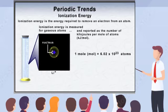The SI unit for energy is the joule, and the ionization energy for a mole of atoms is typically reported in thousands of joules, or kilojoules. For example, the amount of energy required to remove an electron from each atom in a mole of lithium is 520 kilojoules per mole.